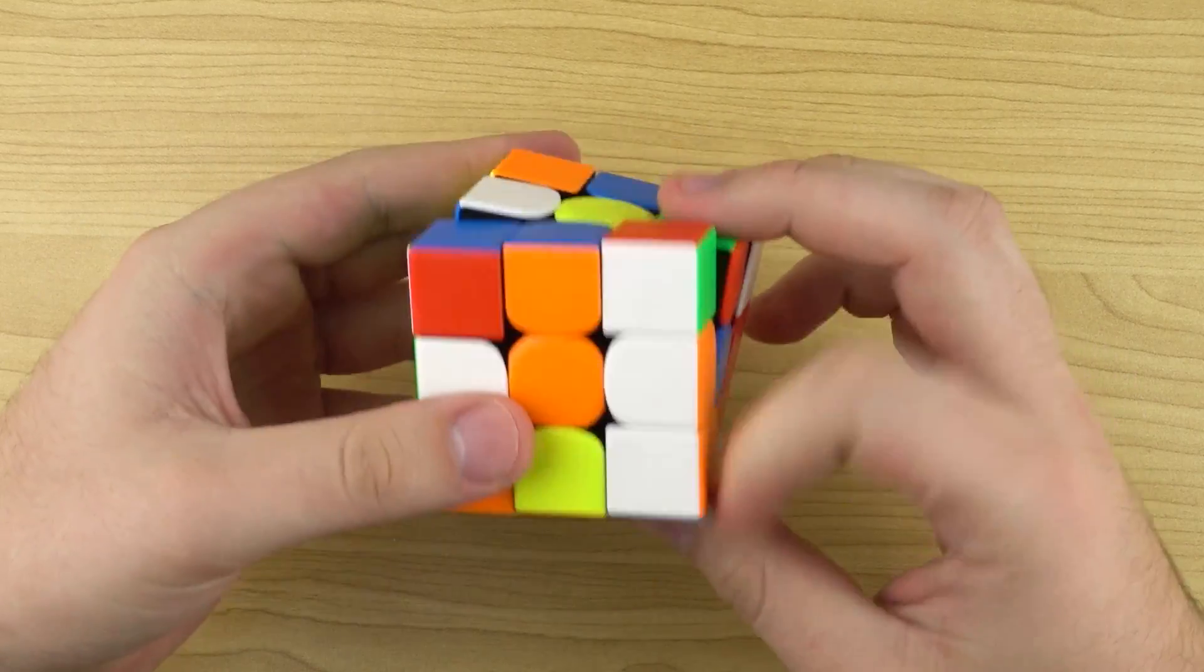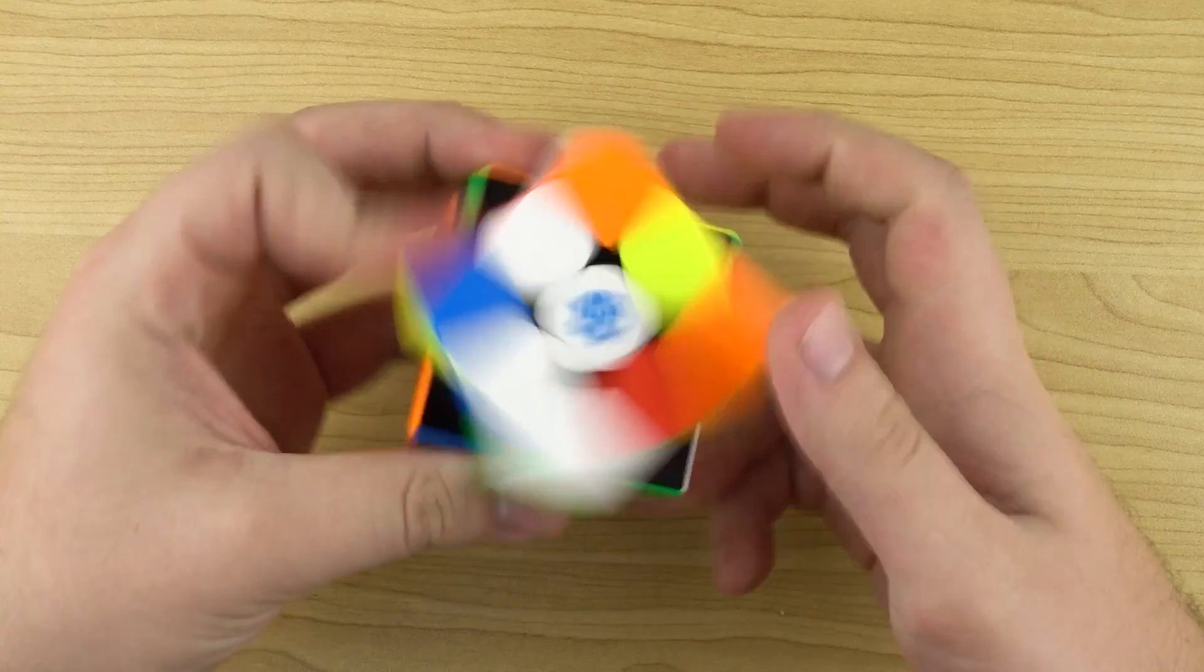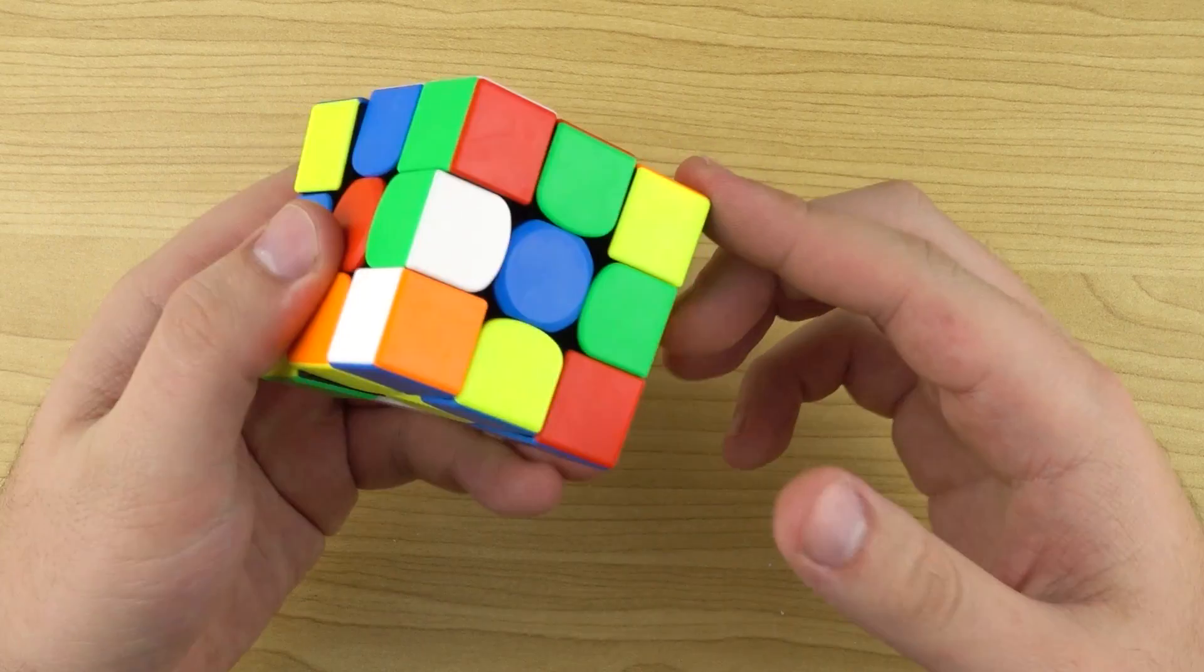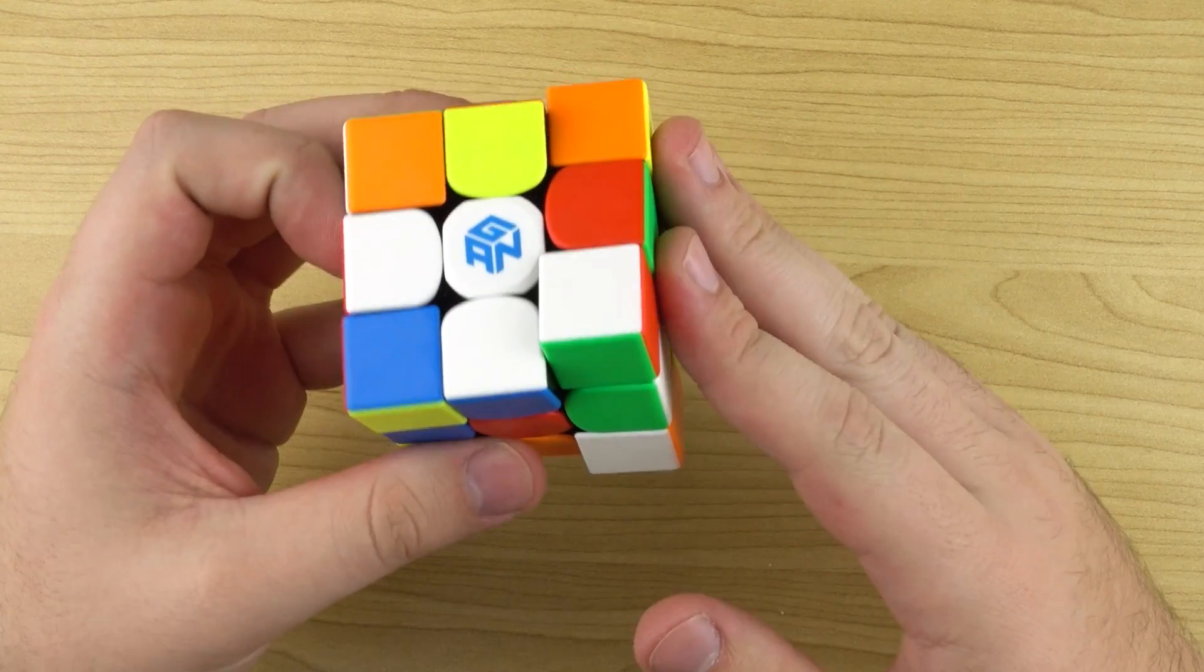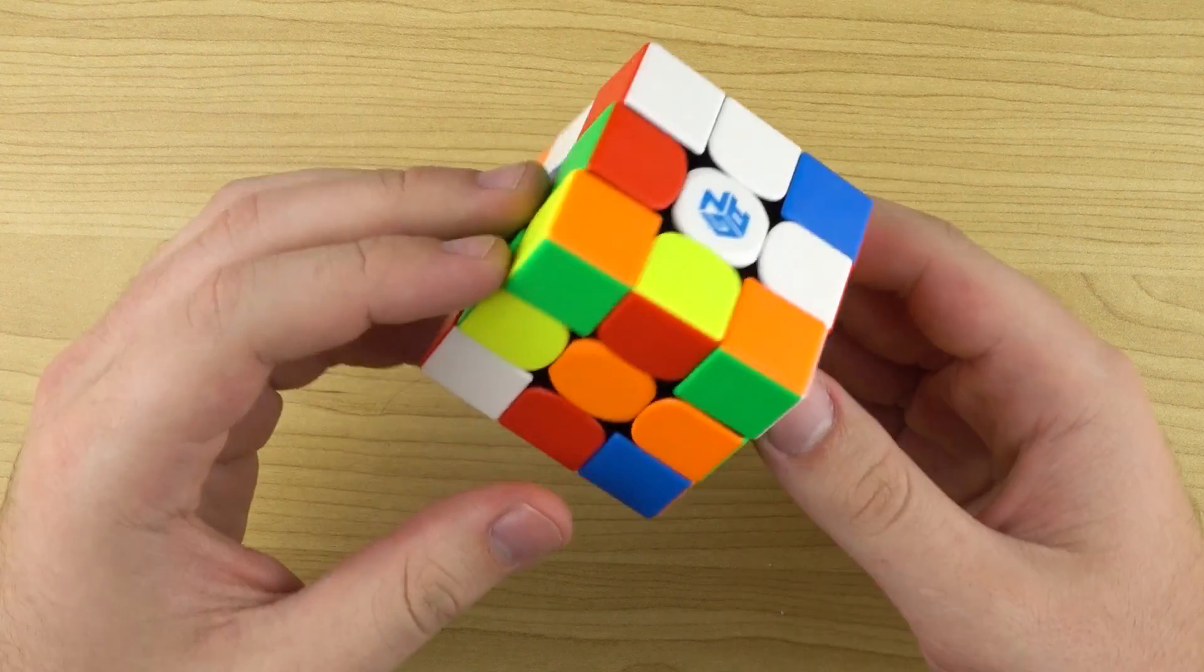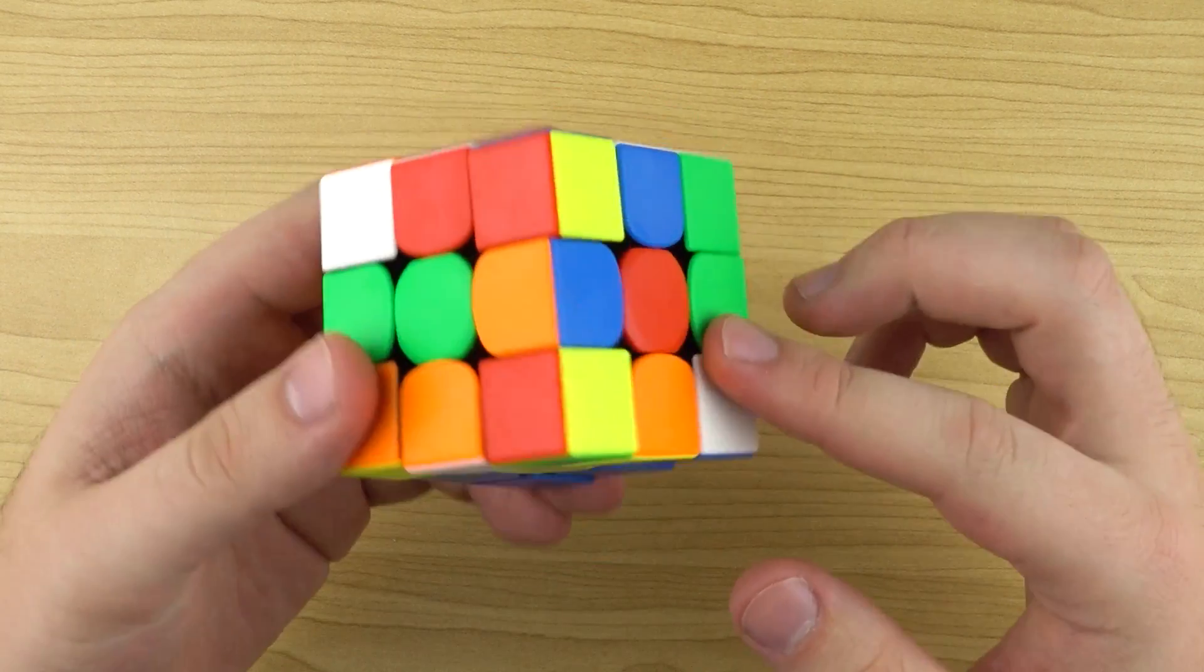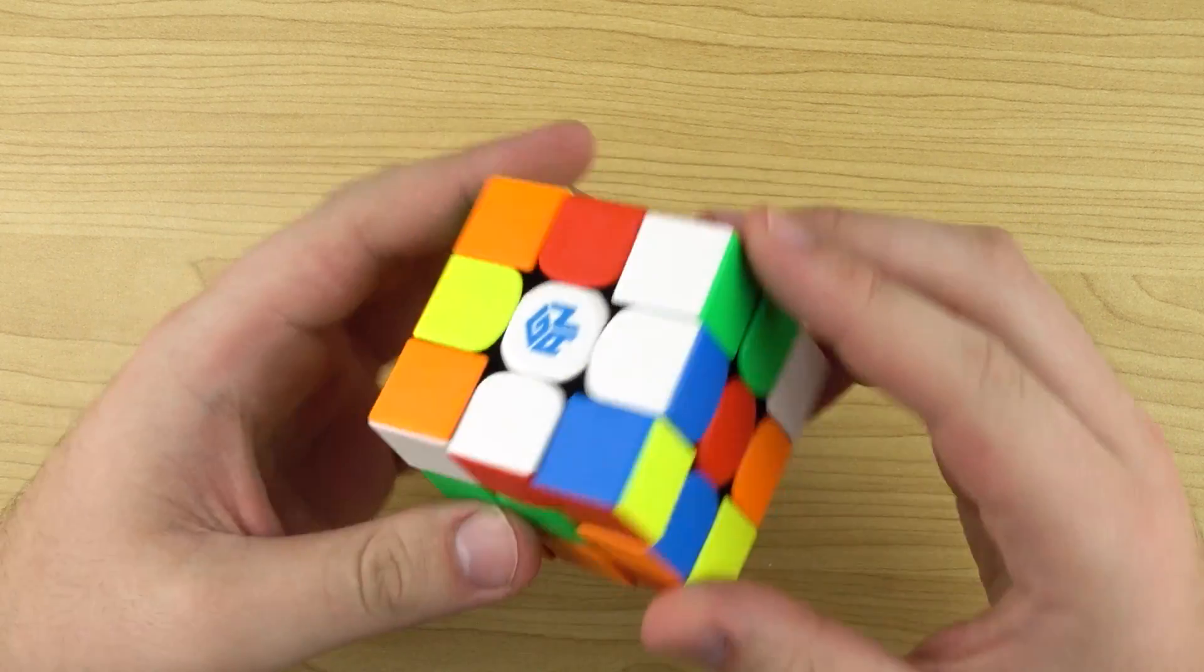Definitely does feel like a GAN puzzle but actually quite bumpy which is a little bit surprising. But if I had to guess those bumps will go away over time. The tensions are pretty good. Now since I've seen a lot of people roasting me in the comments, I have made an attempt to relearn F2L but I'm doing this through a viewfinder so I'm not going to be very good, so please bear with me. Some encouraging words in the comments would be nice but I'm going to try solve this with F2L. I'm really slow but let's do this.